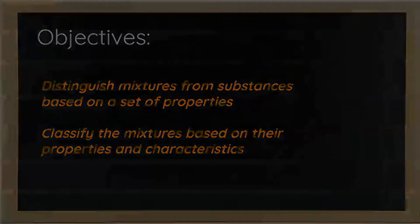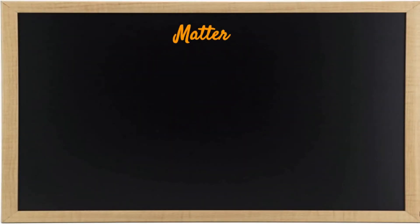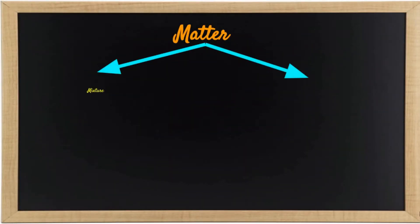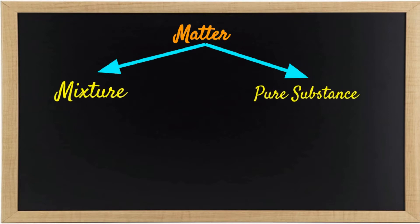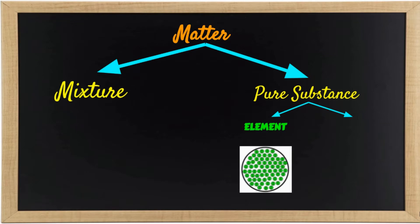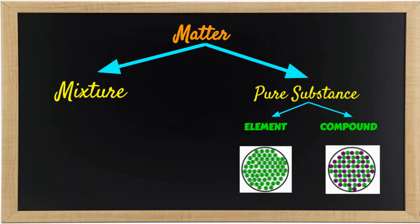Like what I've said, matter can be classified into two: mixture and pure substance. In our previous video lesson, we learned that pure substances can be classified into elements and compounds. An element is a substance consisting of one kind of atom, while a compound is a substance consisting of two or more kinds of atoms.